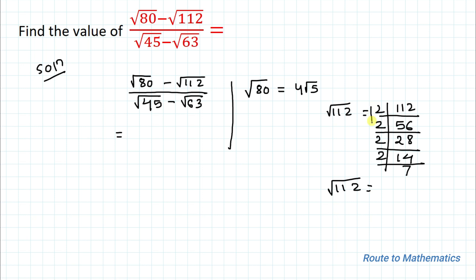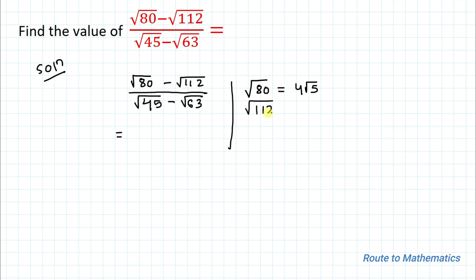So 112 = 2 × 2 × 2 × 2 × 7. We pair the factors: one pair of 2s gives a single 2, another pair of 2s gives another 2, and 7 has no pair so we write root 7. Therefore root 112 = 4 root 7.